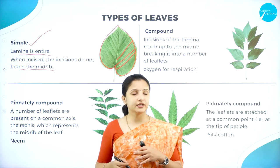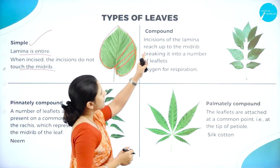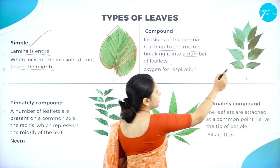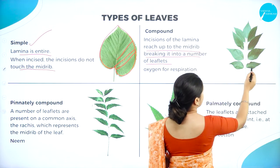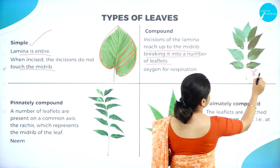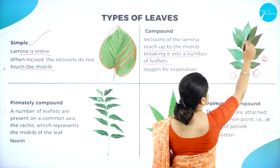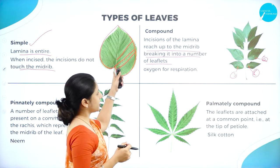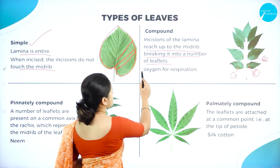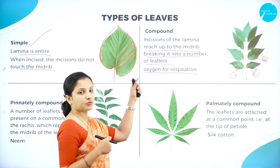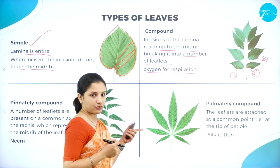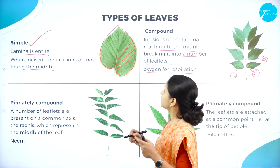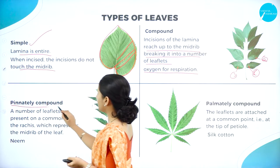Next is compound leaves. In compound leaves, when you make an incision of the lamina, it reaches up to the midrib, breaking into a number of leaflets. In one main petiole you can see a large number of leaflets arising. Compound leaves help provide plants enough oxygen for respiration. In compound leaves again it is of two types: one is pinnately compound leaves and the other is palmately compound leaves.